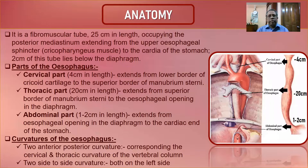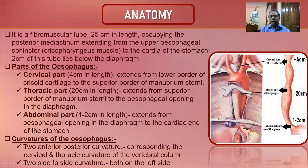The esophagus is a fibromuscular tube 25 centimeters in length, occupying the posterior mediastinum, extending from the upper esophageal sphincter — that is, the cricopharyngeal muscle — to the cardia of the stomach. Two centimeters of this tube lie below the diaphragm. It is divided into three parts: cervical, thoracic, and abdominal.